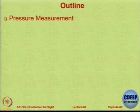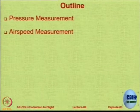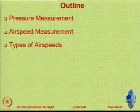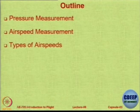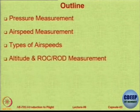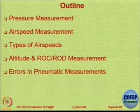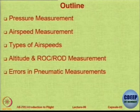The outline of today's presentation is: we start first with pressure measurements, then we move on to measurement of airspeed. Once we study about airspeed measurement, we also need to know that there are different types of airspeeds. We will also look at two measurements — one of altitude and the other of rate of climb and descent — and then we will move on to errors in pneumatic measurements, because most of the instrumentation in the aircraft so far has been based on pneumatics.